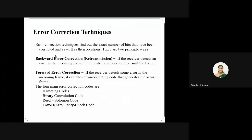Today we are going to discuss error correction techniques. In networks, a sender transmits data to a receiver, and during transmission there are many ways data can get corrupted. In error correction, we try to detect these errors and correct them so the receiver gets the data correctly. Error correction techniques are mainly of two types: backward error correction and forward error correction.